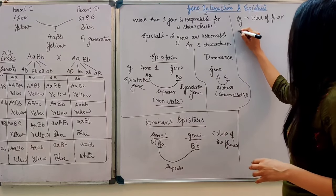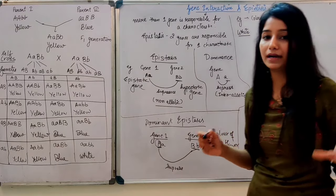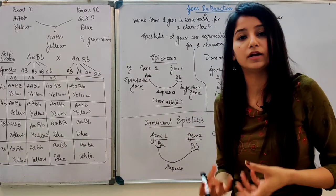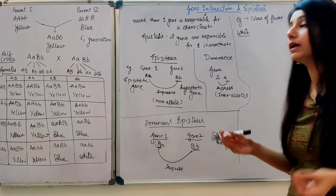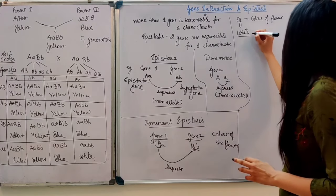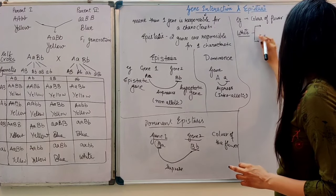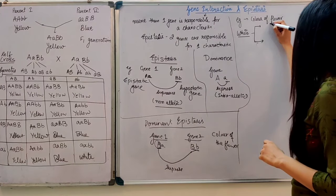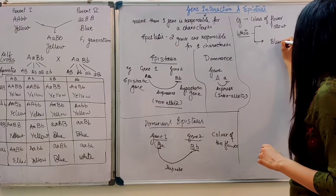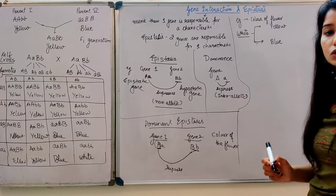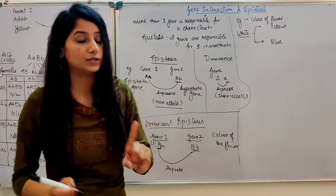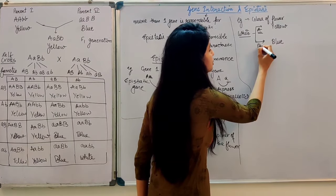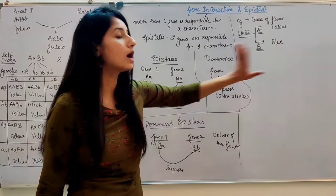The gene will create a protein pigment that determines the flower color. When no pigment is present, the flower will be white. The flower can exist in two colors depending on gene expression — it can be yellow color or blue color.